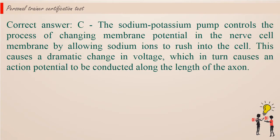Correct answer c. The sodium-potassium pump controls the process of changing membrane potential in the nerve cell membrane by allowing sodium ions to rush into the cell. This causes a dramatic change in voltage, which in turn causes an action potential to be conducted along the length of the axon.